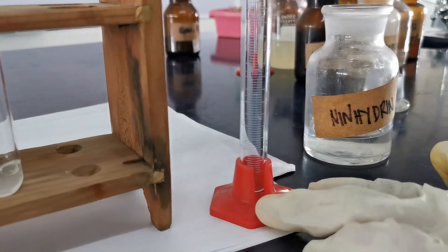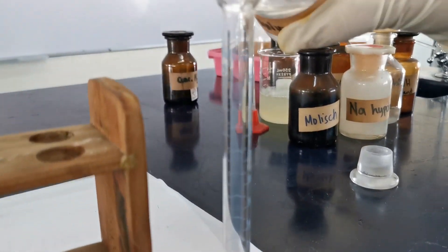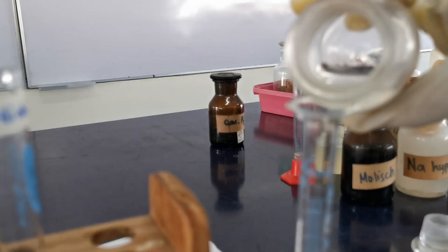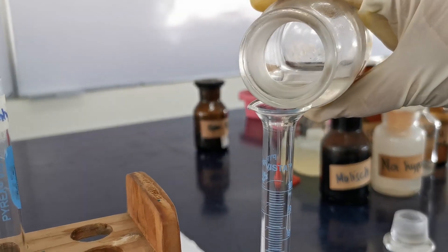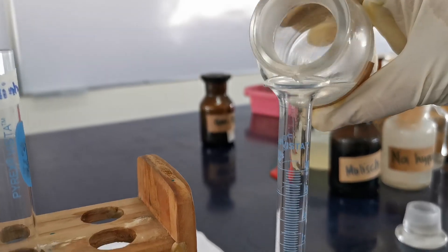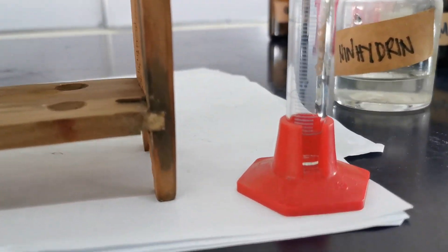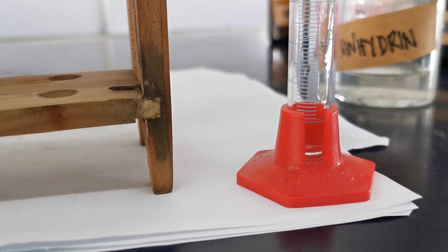Using the graduated cylinder, get 1 ml of egg albumin solution and place it in a clean test tube. Afterwards, add 1 ml of freshly prepared 0.1% aqueous solution of ninhydrin.